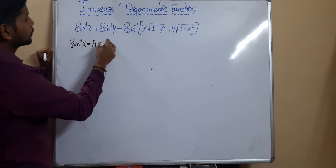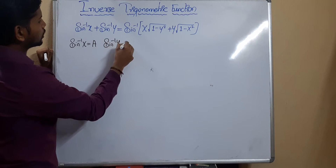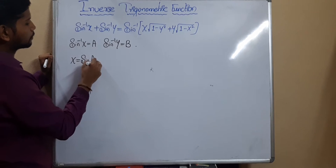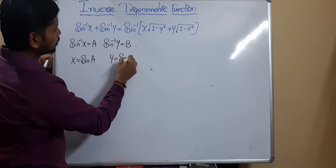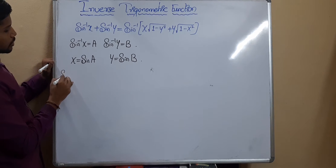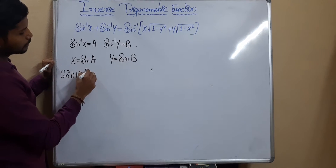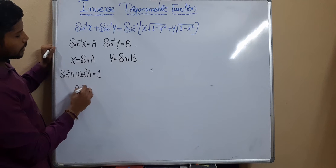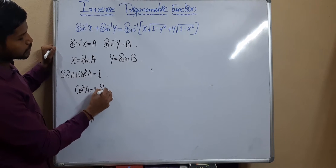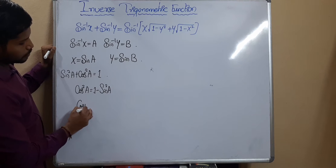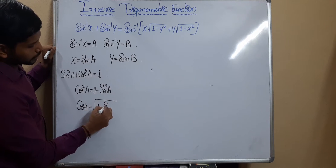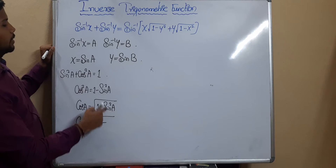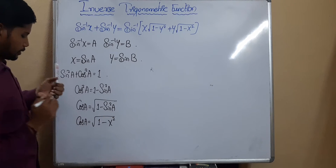Let sin⁻¹(x) = a and sin⁻¹(y) = b. Then x = sin a and y = sin b. Now, sin²a + cos²a = 1, so cos²a = 1 − sin²a, and cos a = √(1 − sin²a) = √(1 − x²).